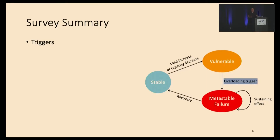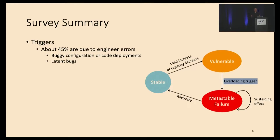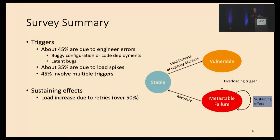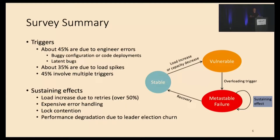Let's take a peek at the survey results and see how triggers, sustaining effects, and recovery methods appear in the wild. First, triggers: about half are due to engineer errors such as buggy configurations, code deployments, or latent bugs — undetected pre-existing bugs. About another one-third are due to load spikes. Multiple triggers are also popular, with 45% presence in the instances we found. For sustaining effects, load increase due to retries is the most common at over 50%. There are also other sustaining effects like expensive error handling, lock contention, and performance degradation due to leader election churn in distributed coordinator applications such as Zookeeper.